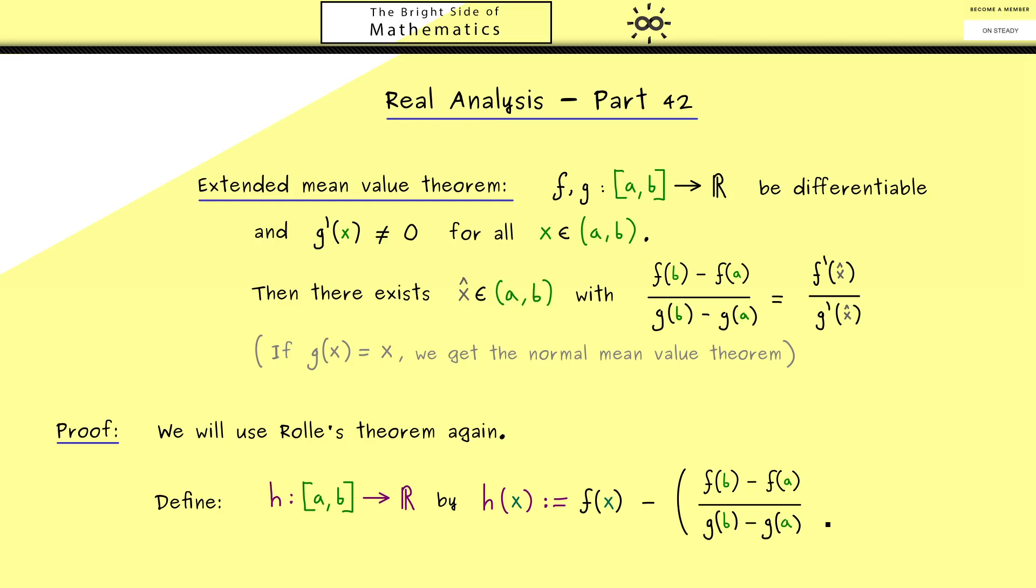But as you already know the generalized slope should be this quotient here. And also the role of x is now given to g of x. Therefore we have to multiply with g(x) - g(a). Nevertheless the y coordinate is still the same so we add f(a). And with this we have the definition of h.